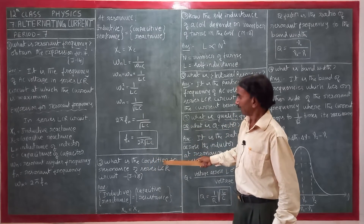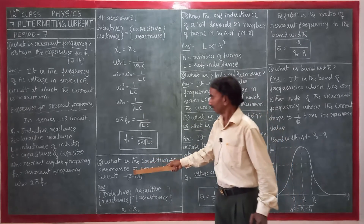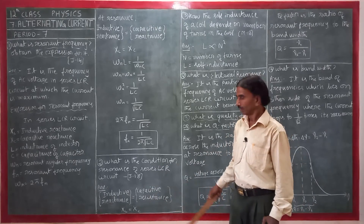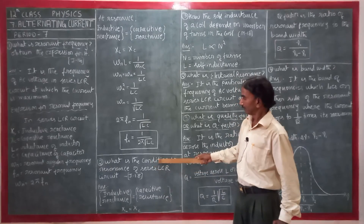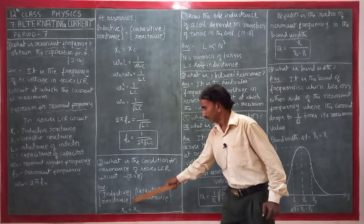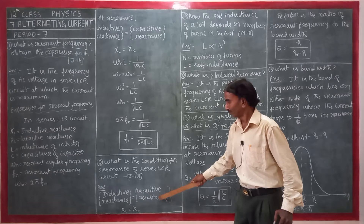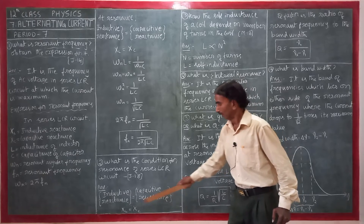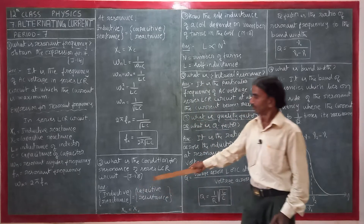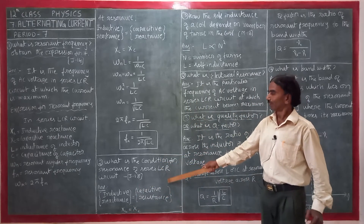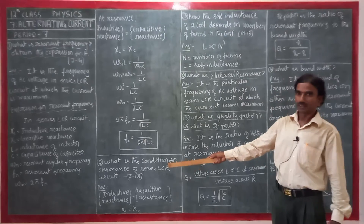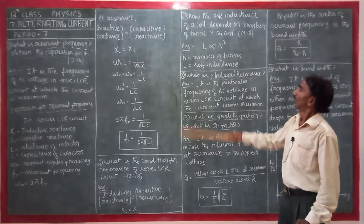What is the condition for resonance of a series LCR circuit? At resonance, inductive reactance is equal to capacitive reactance: XL = XC. This is the condition for resonance of a series LCR circuit.